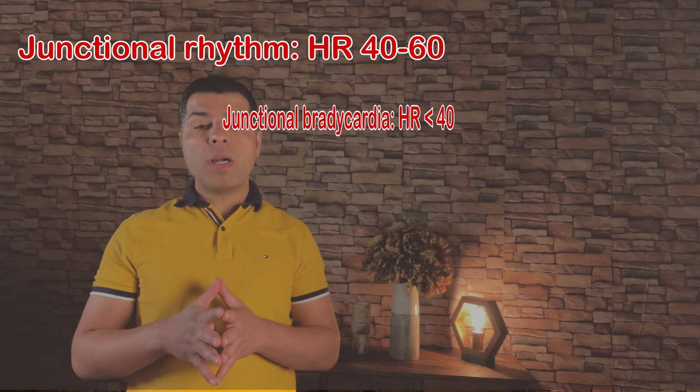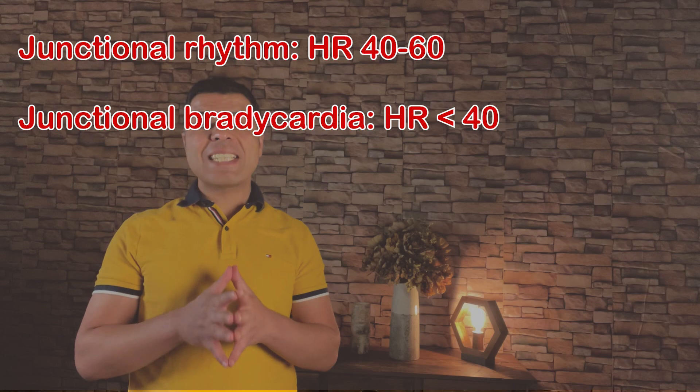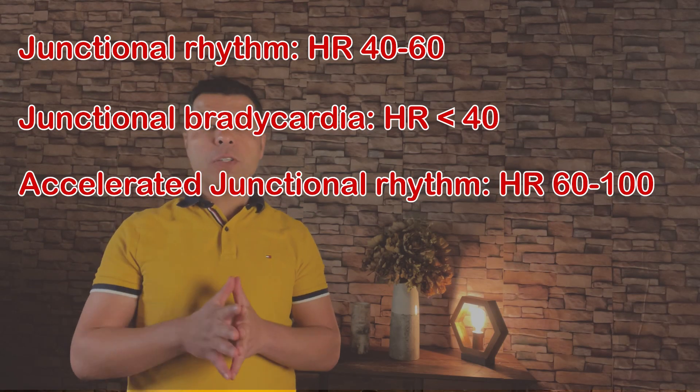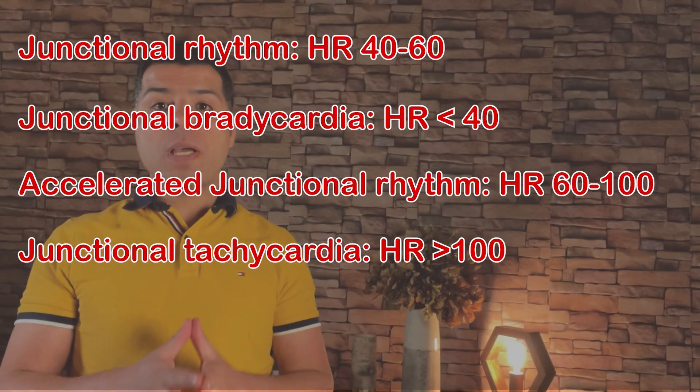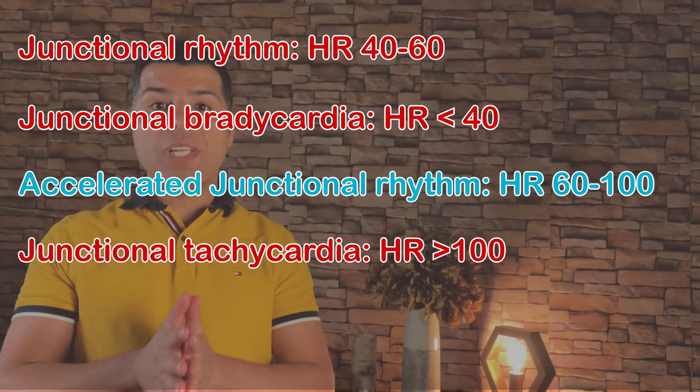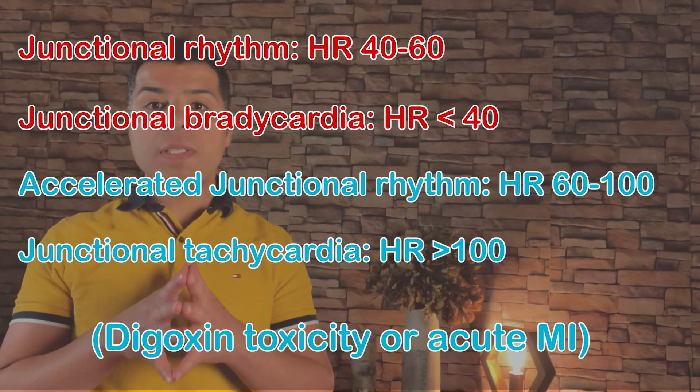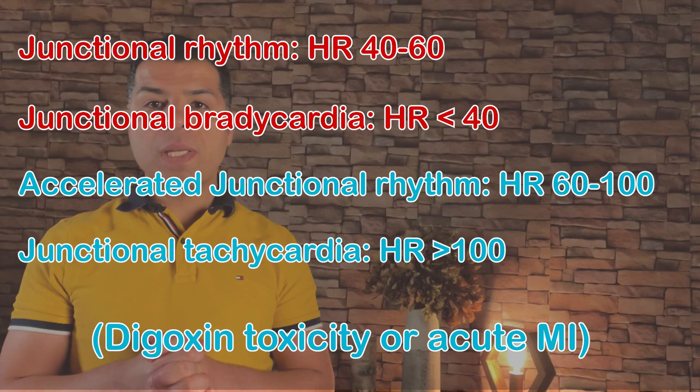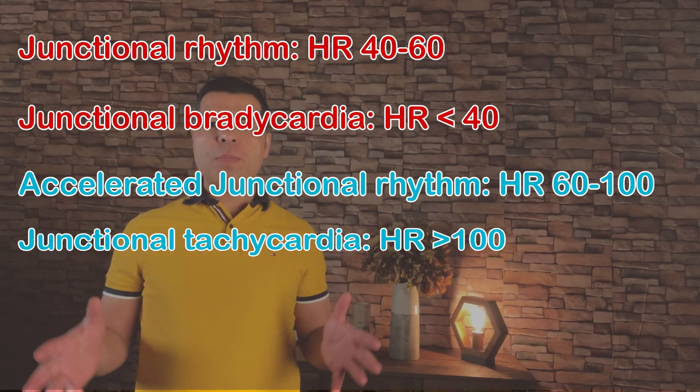The negative P wave in lead 2 occurs because atrial depolarization moves away from lead 2, upward from the AV node toward the atria. Junctional rhythm is classified by rate: escape junctional rhythm is 40–60 bpm, junctional bradycardia below 40, accelerated junctional rhythm 60–100, and junctional tachycardia above 100. When you see accelerated junctional rhythm or junctional tachycardia, immediately think of digoxin toxicity and acute coronary syndrome.